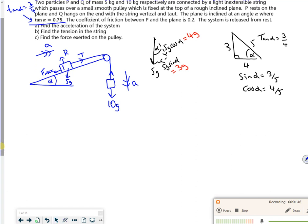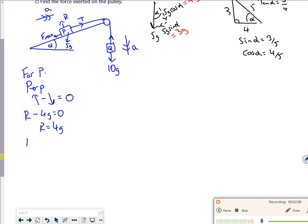If I look at P - that one's P isn't it - for P if I look perpendicular it's in equilibrium because it's not bouncing. The force going up is R, the force going down is 5g cos alpha which has become 4g, so R is 4g.